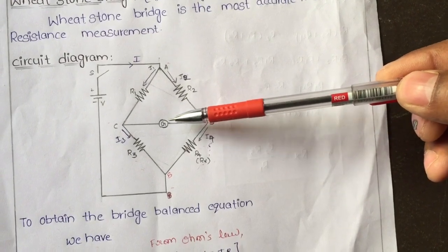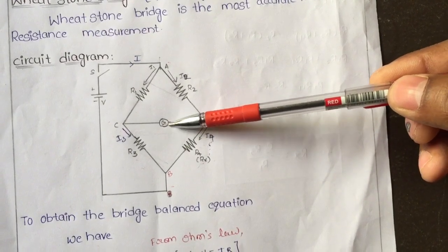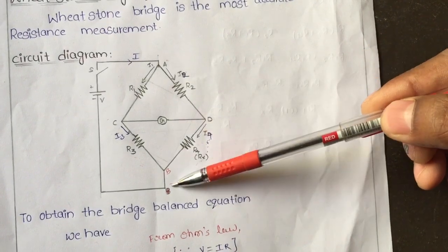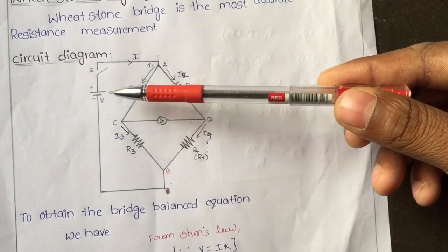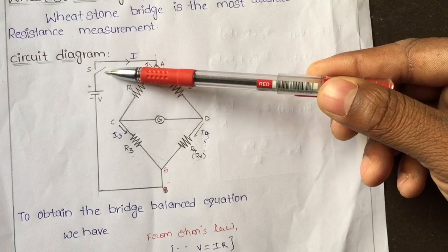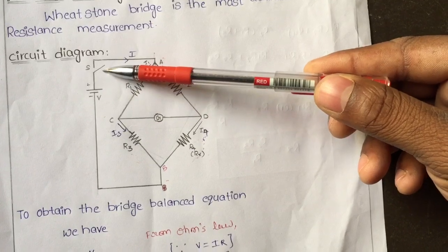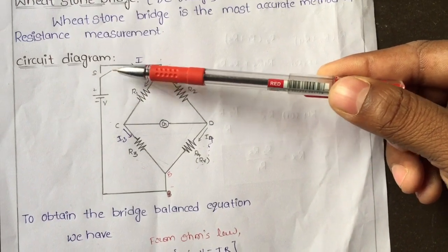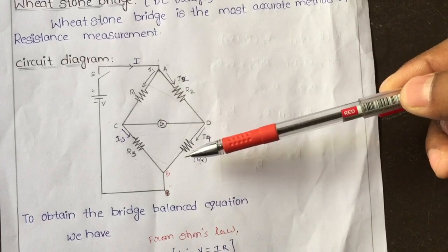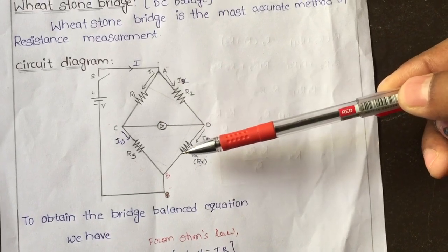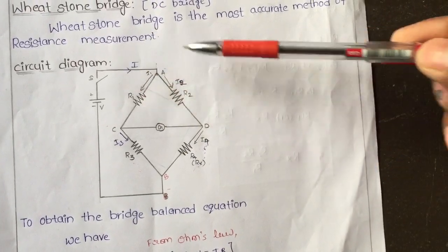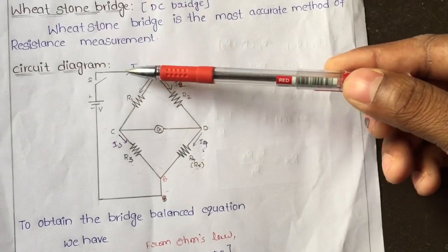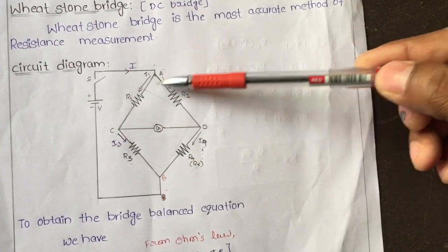The galvanometer is used to measure small amounts of current. Between the terminals A-B there is a voltage source — a battery — and we also have a switch. The switch is used to open or close the circuit: when the switch is open no current flows, and when it is closed current flows through the circuit.